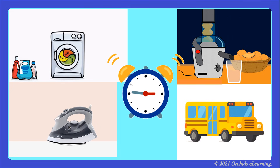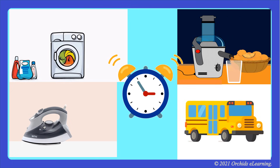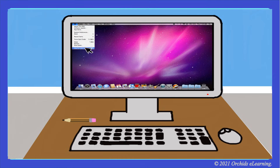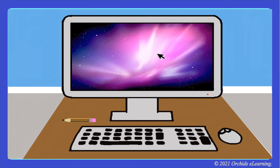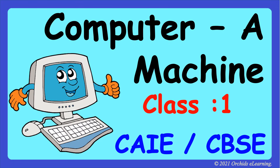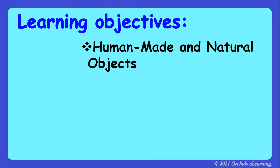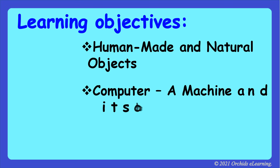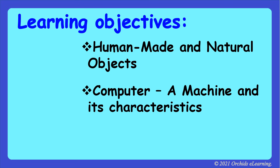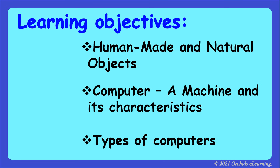Machines are things we use in everyday life to do different types of work. Machines make our work easy. Similarly, a computer is also a machine. By the end of this chapter, you will learn about human-made and natural objects, computer as a machine and its characteristics, and types of computers.